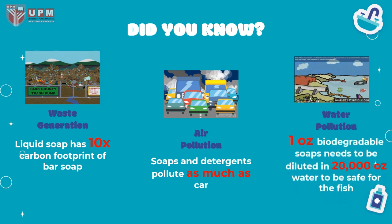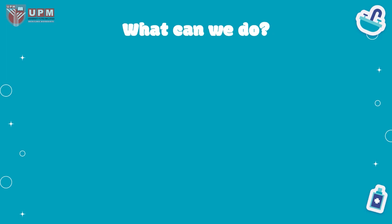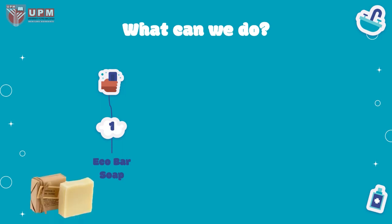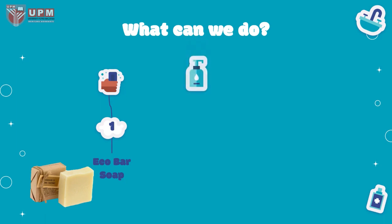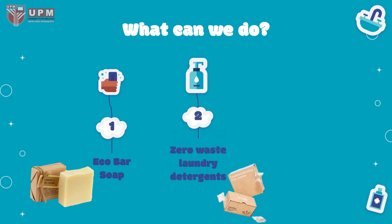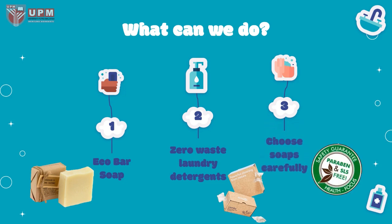Did you know one ounce of biodegradable soap needs to be diluted in 20,000 ounces of water to be safe for fish? So, what can we do? Use eco-friendly bar soap — soap wrapped in paper or cardboard not only uses 30% less water than liquid soap, but also has a greener manufacturing process. Zero waste laundry detergents means cruelty-free, vegan, free or minimal plastic use, and lighter to ship than liquid detergent. We should choose soap ingredients carefully, avoiding parabens, SLS, and others. Try to get mild ingredients with low pH to maintain balance on skin.